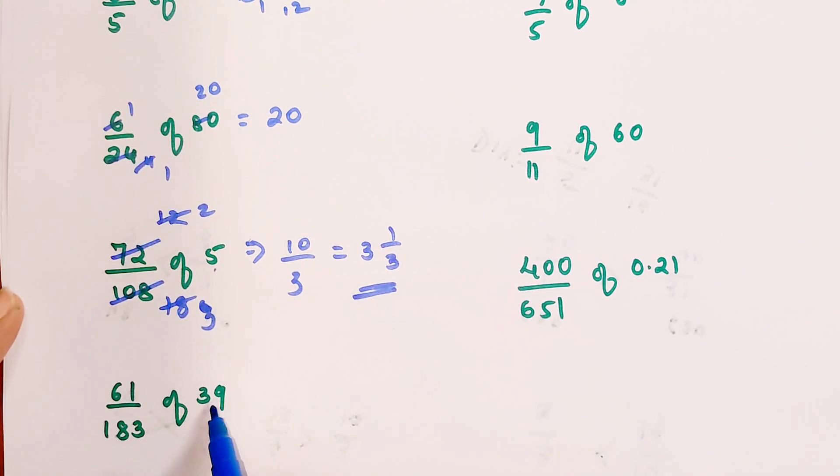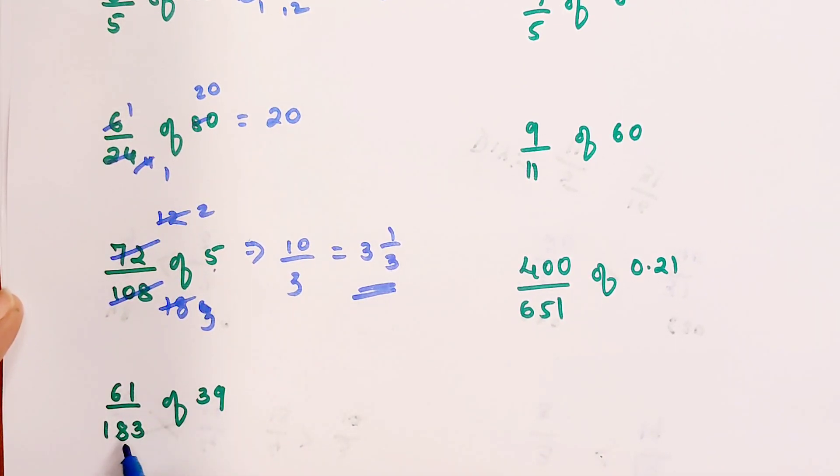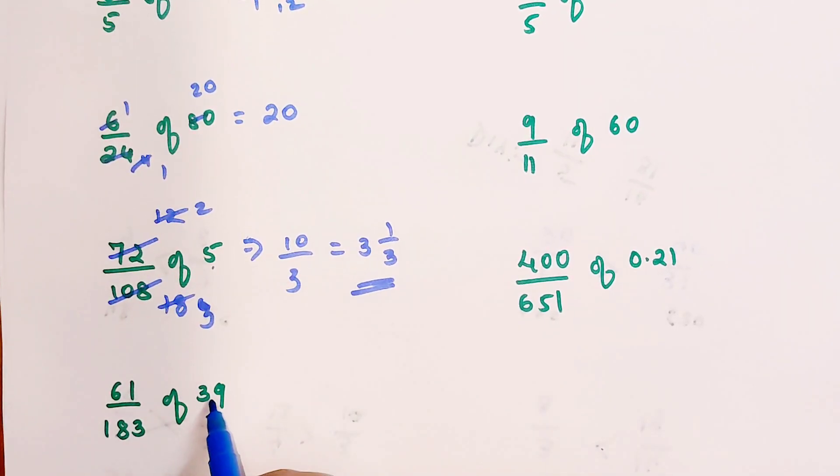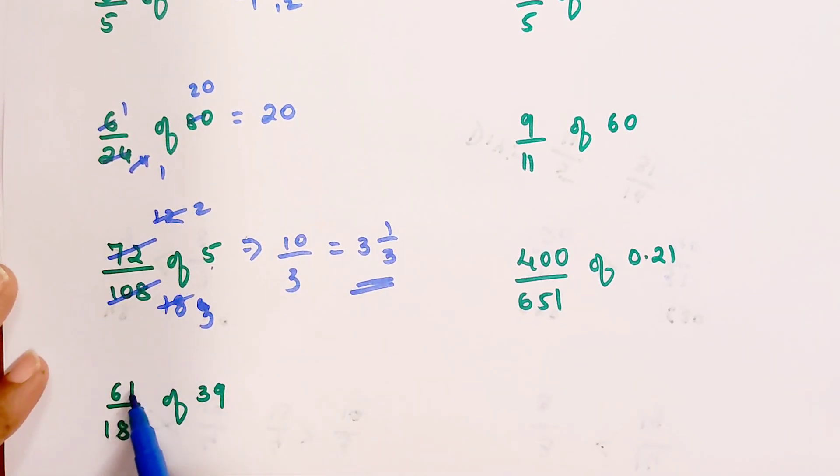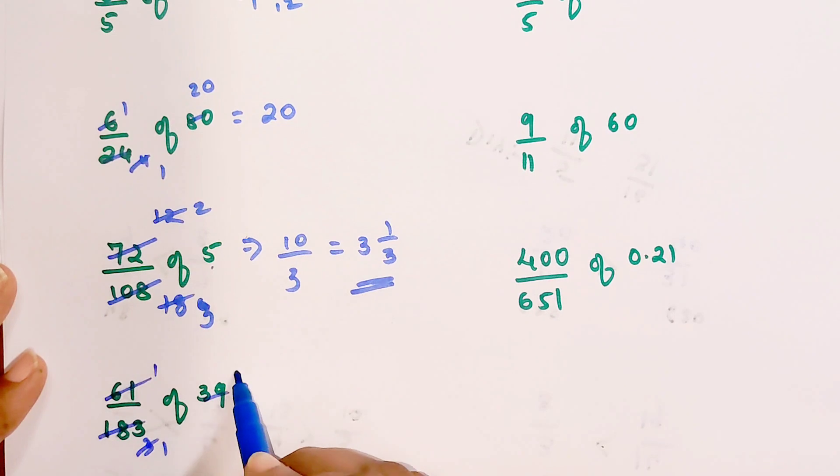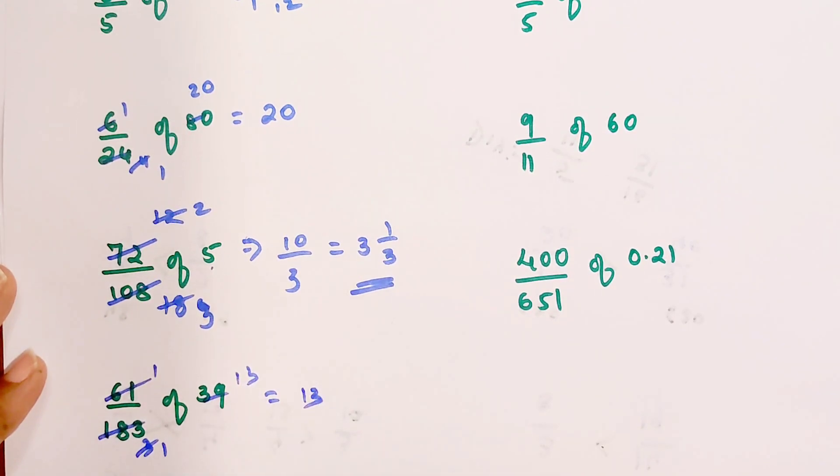Now if you look closely over here, 39 and 183 go in the 3 table, but 61 is a prime number. If you multiply that by 3, you get 183. So 3 ones are 3, 3 thirteens are 39, 61 ones are 61, 61 threes are 183. Your answer is 13.